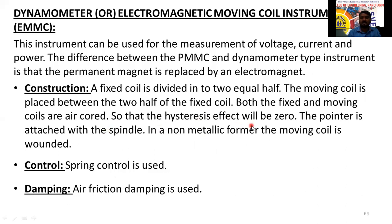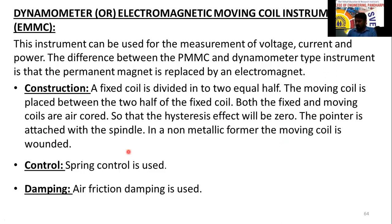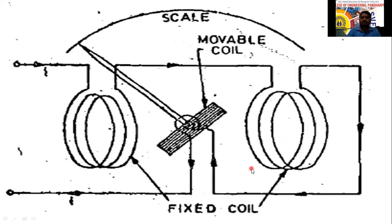Because there is no core material, hysteresis losses and eddy current losses are eliminated — those losses occur in the iron core part. Since air acts as the core here, no such losses occur. The pointer is attached to the spindle; the moving coil is wound on a non-metallic former.